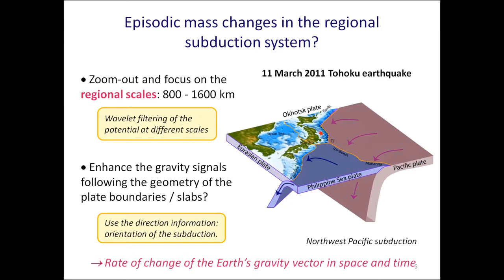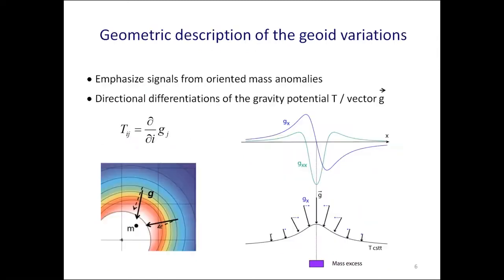The particularity of our method is that we did not try to reach the highest possible spatial resolution. Instead, we focus on the intermediate spatial scale. If we move to smaller scales, the anomalies concentrate near the epicenter. If we move to larger spatial scales, the signals progressively vanish. At these intermediate scales, we search for possible signals correlating with the geometry of the plate boundaries — elongated gravity variations along the orientations of the boundaries of the slab. We introduce this direction information by using gravity gradients rather than geoid or intensity of the gravity field.